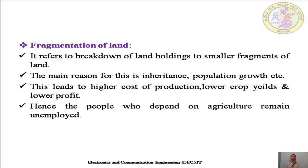The next reason for unemployment is fragmentation of land. Fragmentation means the breakdown of land holdings into smaller fragments — that is, dividing the land into smaller portions. The main reasons for this are inheritance and population growth. This fragmentation leads to higher cost of production, lower crop yields, and lower profitability. As land is fragmented and agricultural work is hindered, the people who depend on agriculture remain unemployed, and it also creates poverty among rural people.